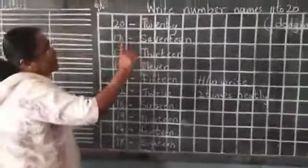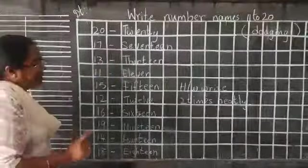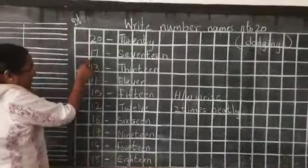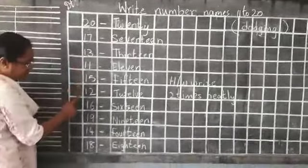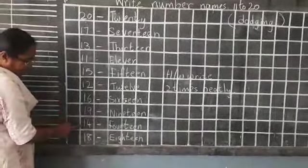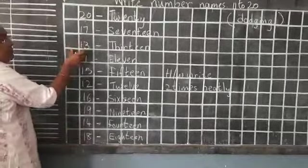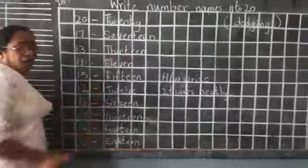Once again I will read for you. Write number names 11 to 20 correctly, okay? 20, 17, 13, 11, 15, 12, 16, 19, 14, 18. Whatever number is there, you have to write the spellings, okay?